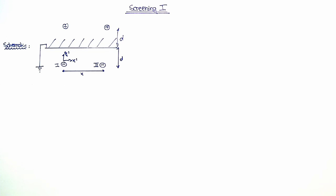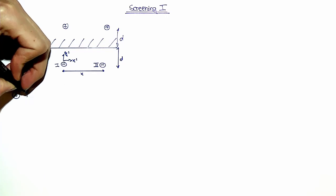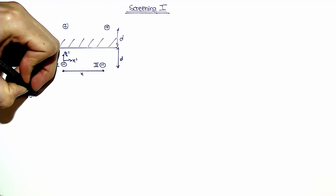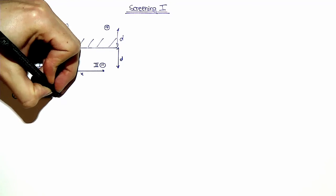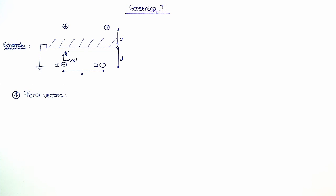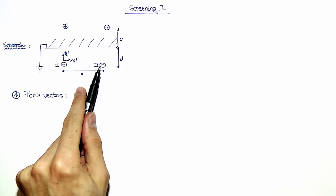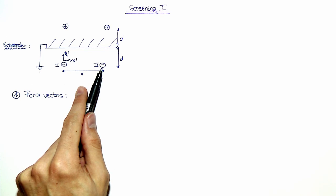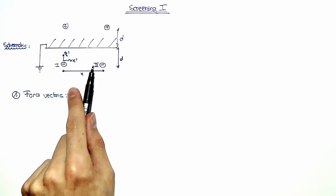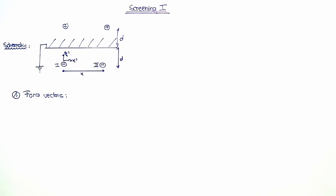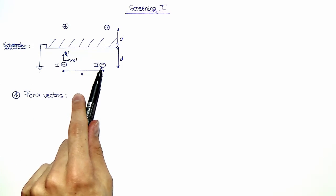The first solution method is to calculate the forces on one of the electrons due to the electric field of the other charges, including the mirror charges. As both electrons have the same separation from the ground plane, it is sufficient to calculate the repulsive forces on one of the electrons, and we are going to choose electron 2. As a first step, we calculate the repulsive force by electron 1 on electron 2.